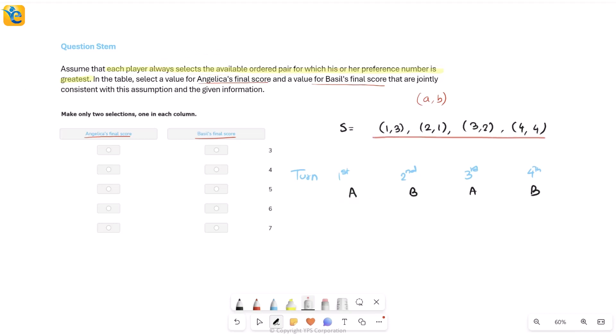Angelica will pick up the pair where her preference number is the greatest and her preference number is always the first number. Look at all of the first numbers which is the greatest one. It is this 4 which means I'm sure that Angelica is going to pick up 4,4 as the first ordered pair. Then this one is out and comes Basil's turn. Basil will pick up wherever the second number is the greatest because that's what Basil's preference number is. So if you see 3, 1 and 2, the greatest among these is 3. So I am sure about Basil's first pick as well. This is 1,3.